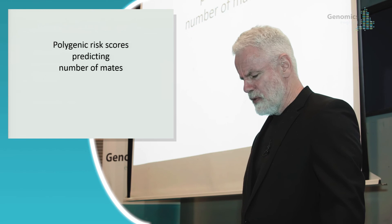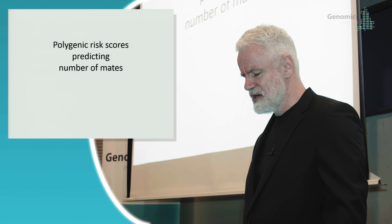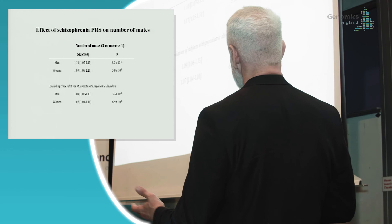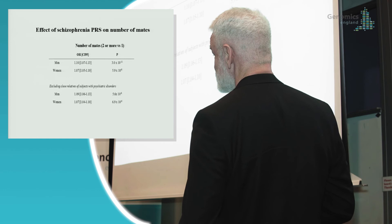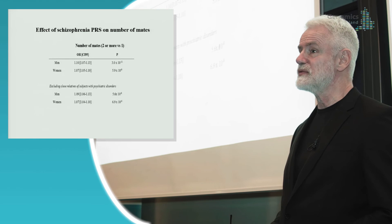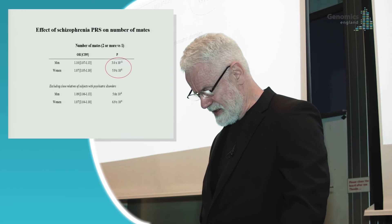Once you have data like we have, you can begin to ask questions where the answers make me blush. For example, if you take polygenic risk score for schizophrenia and ask about the number of partners you reproduce with, the higher the polygenic risk score for schizophrenia, the more likely you are to have children with more than one partner. So the novelty-seeking that leads to creativity also leads to all kinds of social problems.